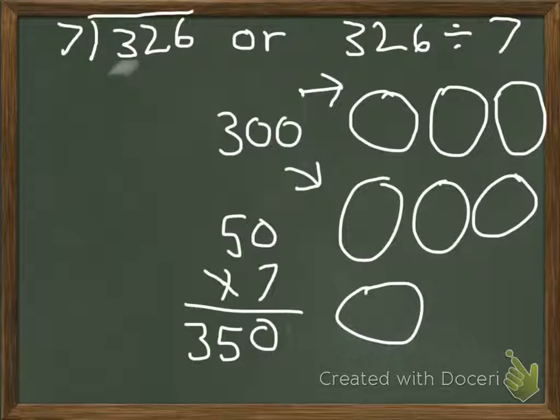If I'm putting 50 in each circle, my number then will be larger than the original number, and I have to stay, I've got to get exactly 326. So we need to find an easier number to work with.